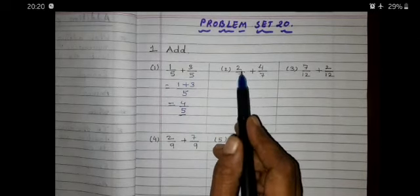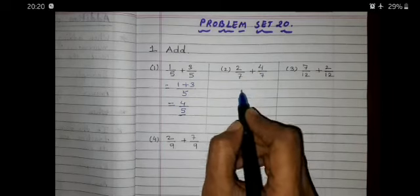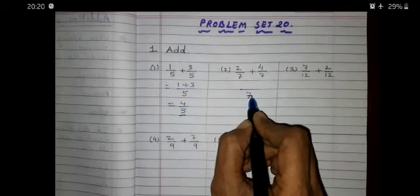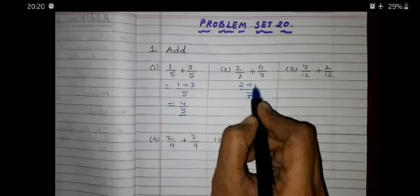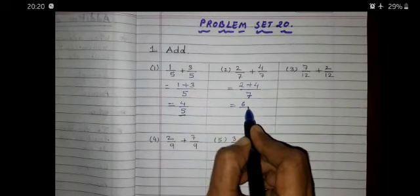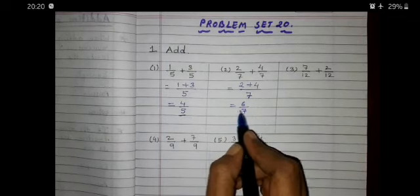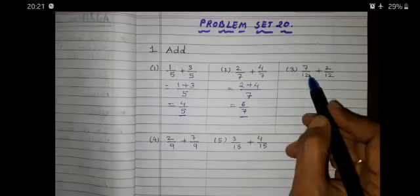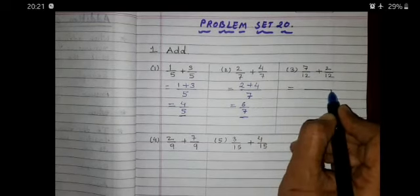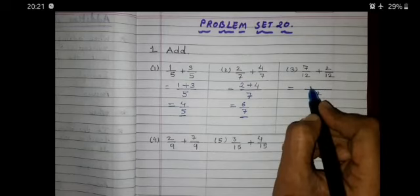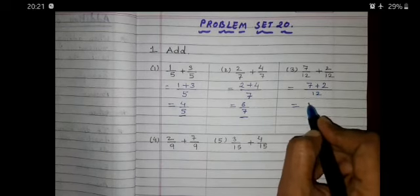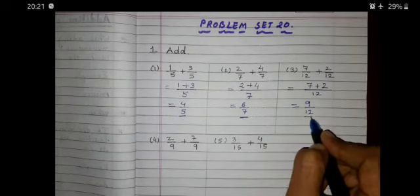Second one: 2 upon 7 plus 4 upon 7. The common denominator of both fractions is 7. We write 7 as denominator and numerators are 2 plus 4. So, 2 plus 4 is equal to 6, and 7 as denominator. So, answer is 6 upon 7. Third one: 7 upon 12 plus 2 upon 12. First we write common denominator as it is, 12, and add the numerators: 7 plus 2 is 9. So, 9 upon 12 is the answer. Fourth one: 2 upon 9 plus 7 upon 9. The common denominator is 9. We write 9 and 2 plus 7. 2 plus 7 is 9, so 9 upon 9.